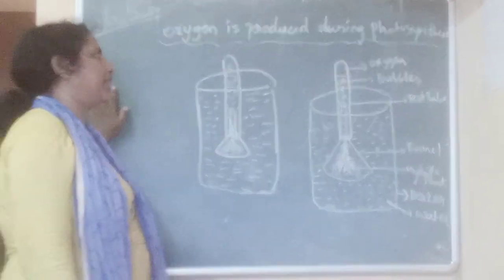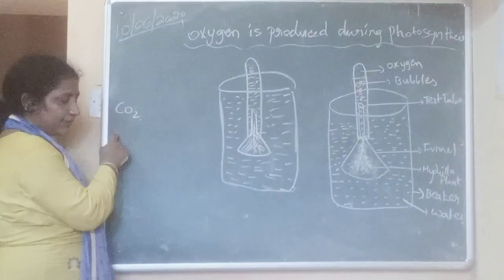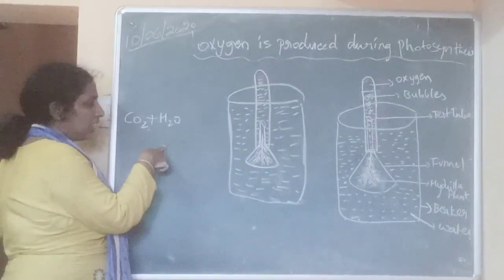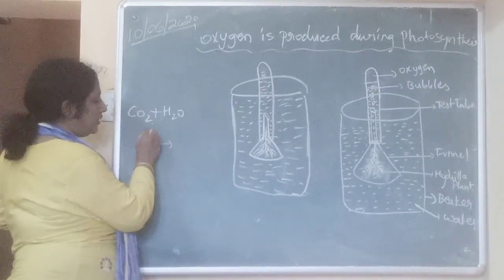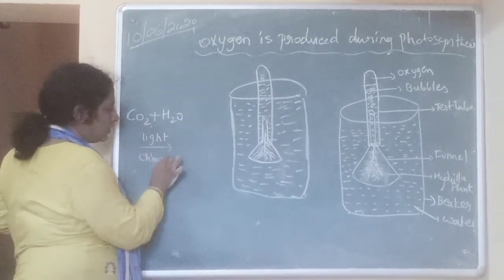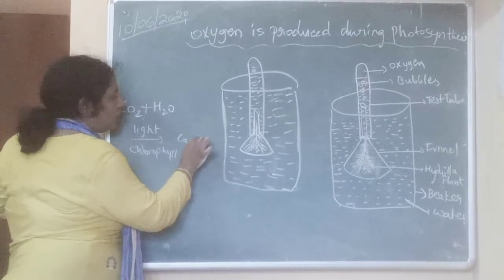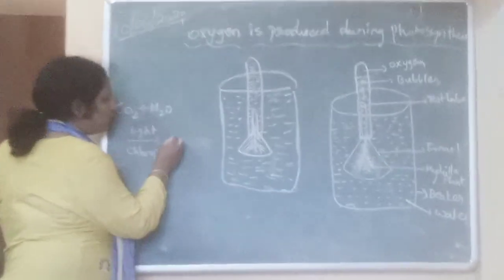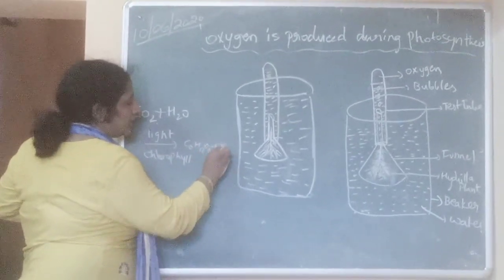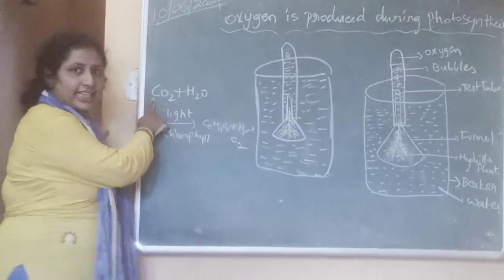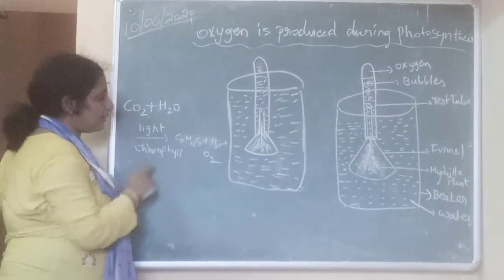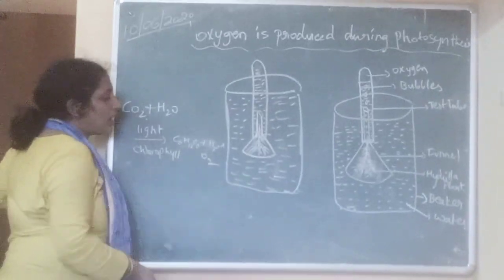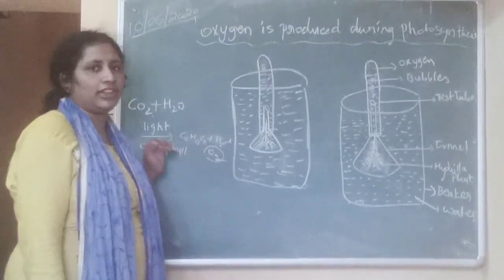Next experiment: oxygen is produced during photosynthesis. Up to now you have seen the experiment for carbon dioxide — the Benja experiment — and water — the manhole experiment. We also covered sunlight, chlorophyll, and the iodine starch experiment. Now we will see that oxygen is evolved during photosynthesis.